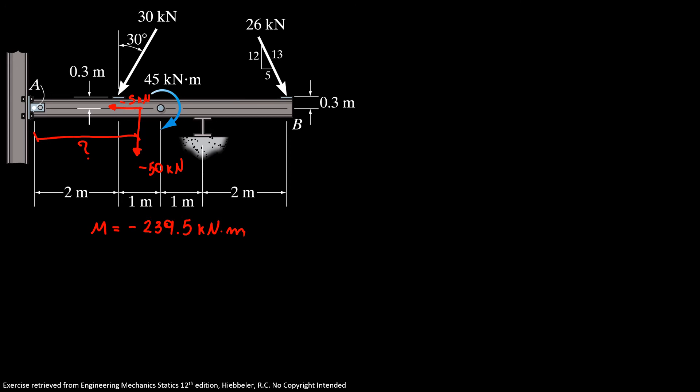So here the only force that generates moment is our Y force. So we can do the sum of the moment equals the force times our distance we're gonna call X. So here's our X. The sum of the moment is minus 239.5 kilonewtons. Our force is minus 50 kilonewtons and we're gonna find our X.